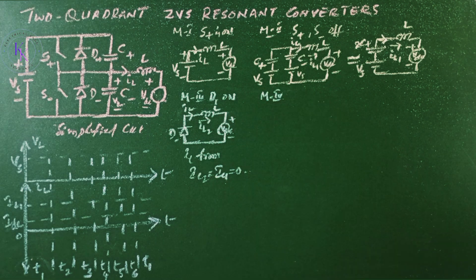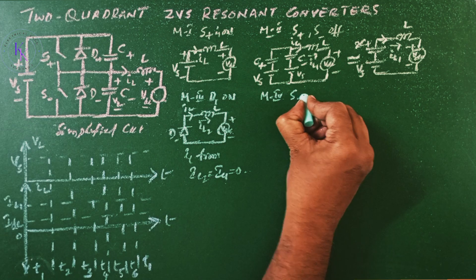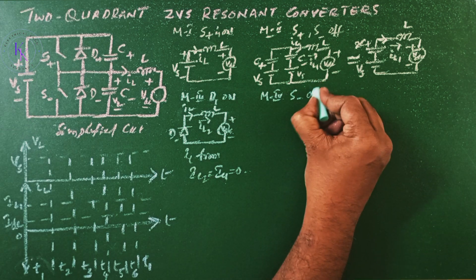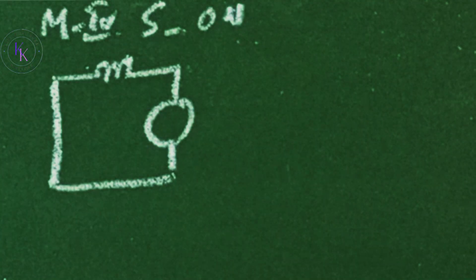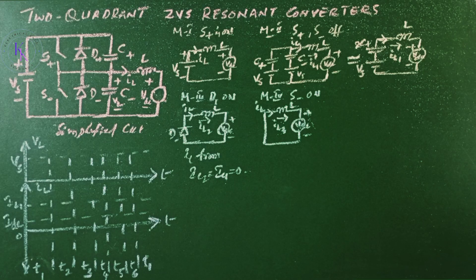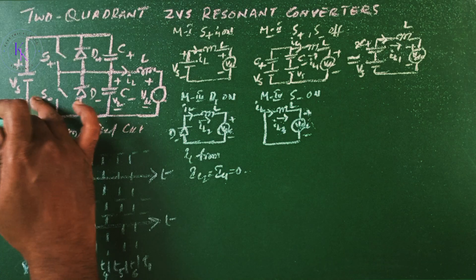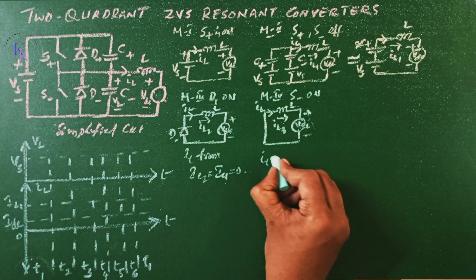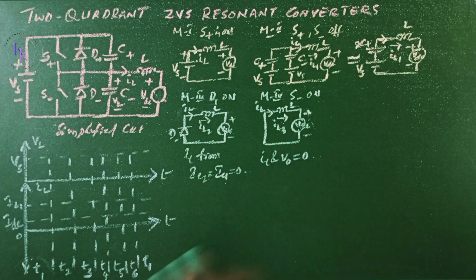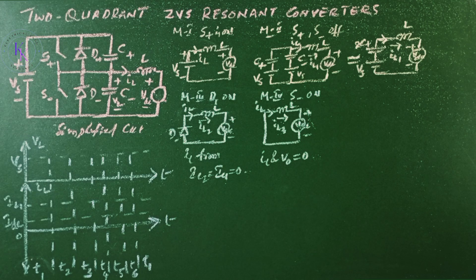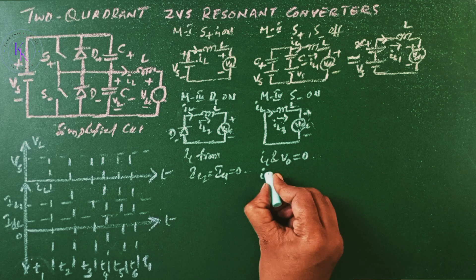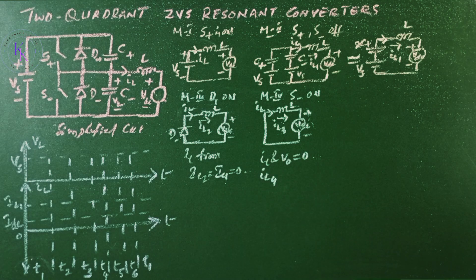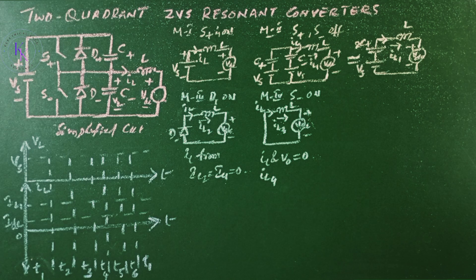Mode 4 when switch S minus is turned on. The equivalent circuit is given by S minus is turned on. IL and V naught becomes 0 and IL continues to fall in negative direction to IL4 until the switch voltage becomes 0 and S is turned off.